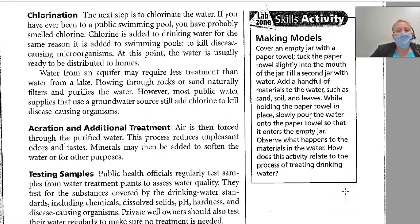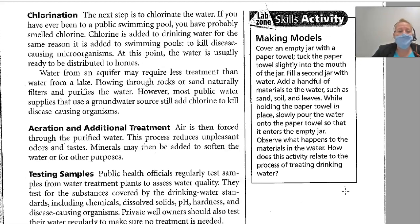Chlorination. The next step is chlorinating the water. If you have ever been to a public swimming pool, you have probably smelled chlorine. Chlorine is added to drinking water for the same reason it's added to swimming pools — to kill disease-causing microorganisms. At this point, the water is usually ready to be distributed to homes. Water from an aquifer may require less treatment than water from a lake, since flowing through rocks or sand naturally filters and purifies the water. However, most public water supplies using underground water sources still add chlorine to kill disease-causing organisms.